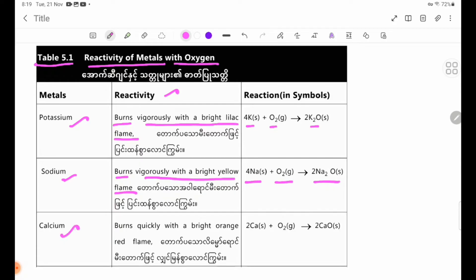Calcium burns quickly with a bright orange-red flame. The reaction is: 2Ca(s) + O2(g) → 2CaO(s).